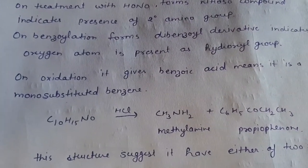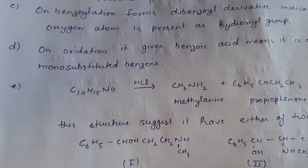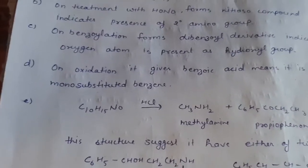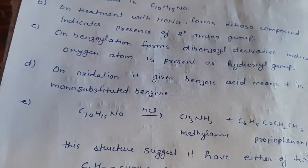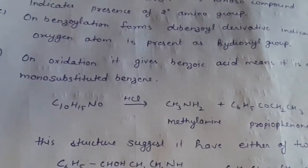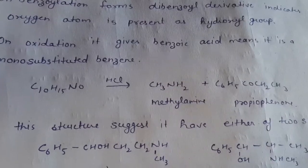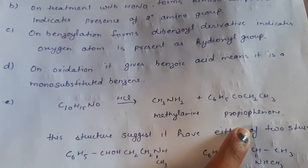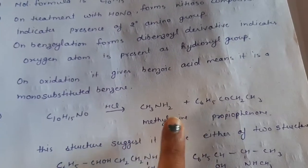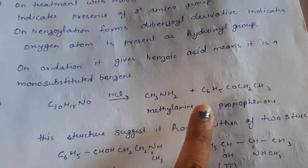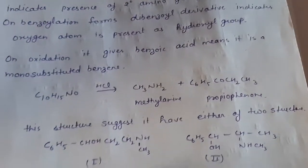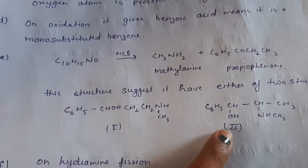Next point is that when we react this ephedrine with HCN at high temperature, we get methylamine and propiophenone. This one is methylamine and this is propiophenone. The formation of these two compounds show that the structure of this ephedrine will be either this one or this one.